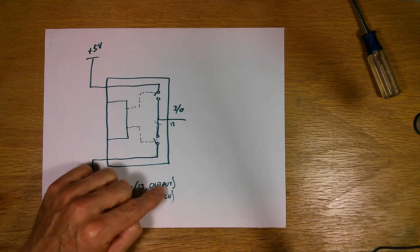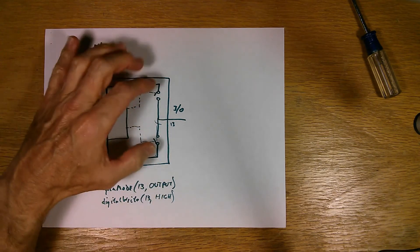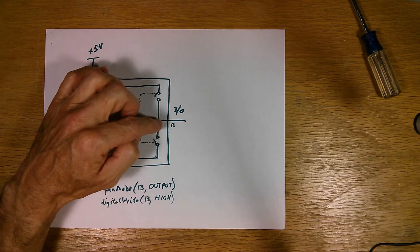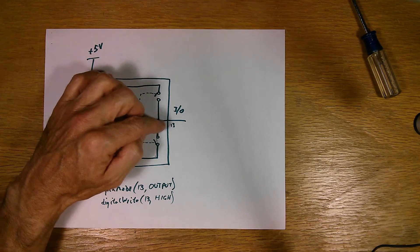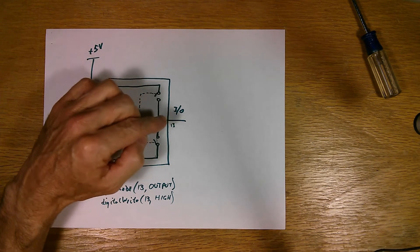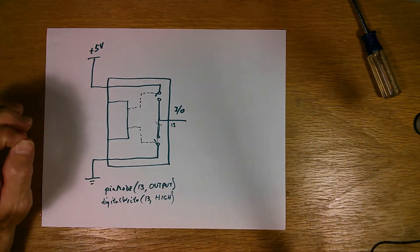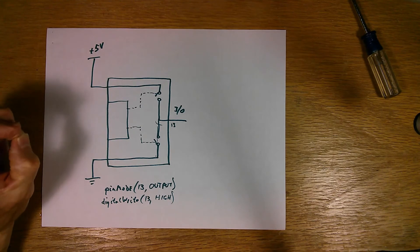If you want to make it an input, you just change this word here to input. What it does is it turns both these transistors off, and then this pin is in a state they call floating, and it can be driven up or down by something out here, an external device. But in this case we're going to talk about using an I/O pin as an output.